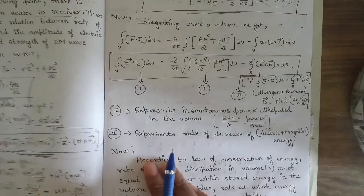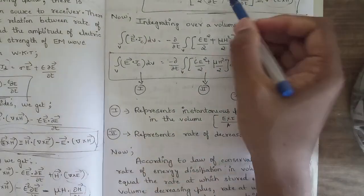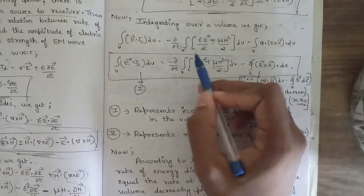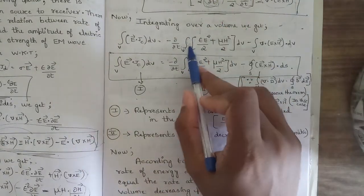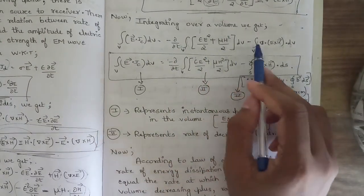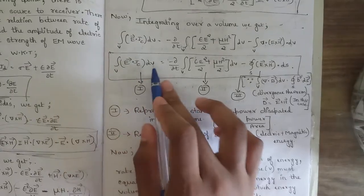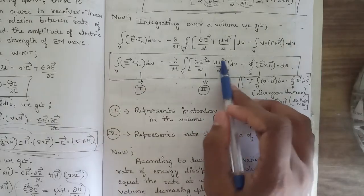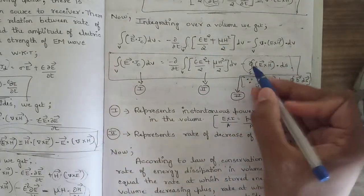Now integrating over a volume, the volume integral of E·Jc dV equals: −(∂/∂t) taken common outside, times the volume integral of [(εE²/2) + (μH²/2)] dV, minus the volume integral of ∇·(E × H) dV.